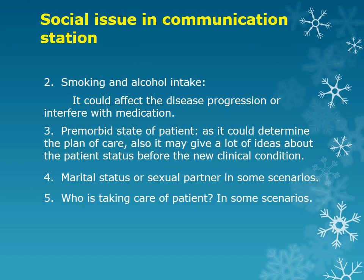You have to ask the patient about smoking and alcohol intake. You might think there is no relation, but for example, if the patient has tuberculosis and you are giving rifampicin and isoniazid, and this patient is a heavy alcohol drinker, their liver function could be affected by both alcohol and the drugs. If the patient has bronchial asthma, you have to ask about smoking — this is called the pre-morbid state for the patient.